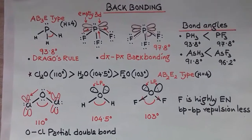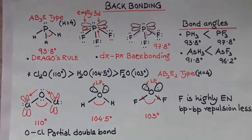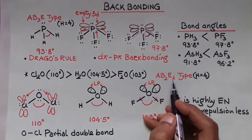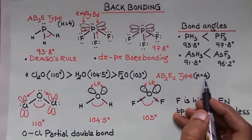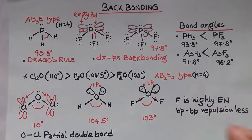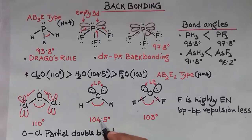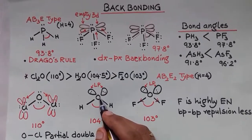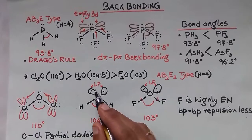Next case is Cl2O, H2O, and F2O. These are AB2E2 type with H value 4, meaning steric number 4 with SP3 hybridization. In H2O, bond angle is 104.5. In SP3 it's 109.5, so it's slightly reduced due to lone pair-lone pair repulsion.